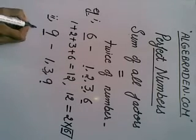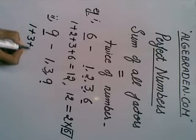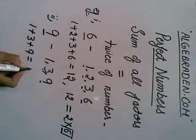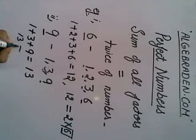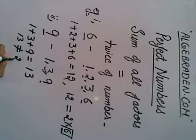We have to add up all the factors. 1 plus 3 plus 9 which gives us answer 13. 13 is not equal to twice of the given number. So, we can say that 9 is not a perfect number.